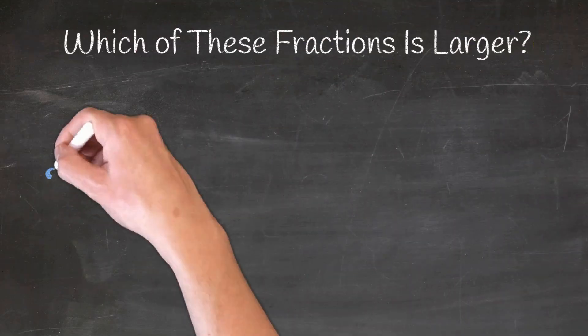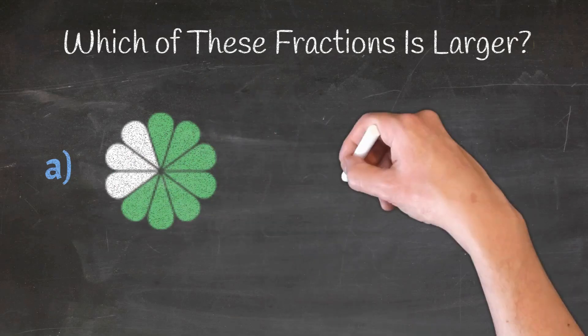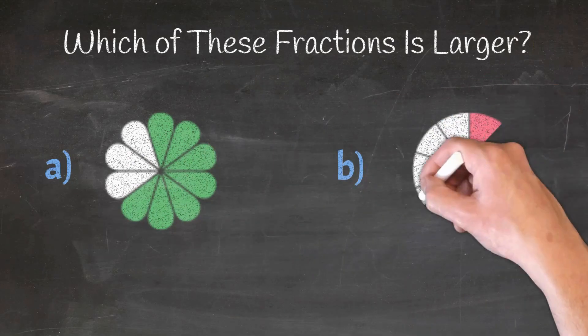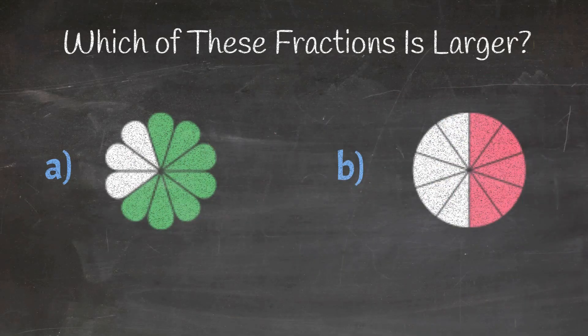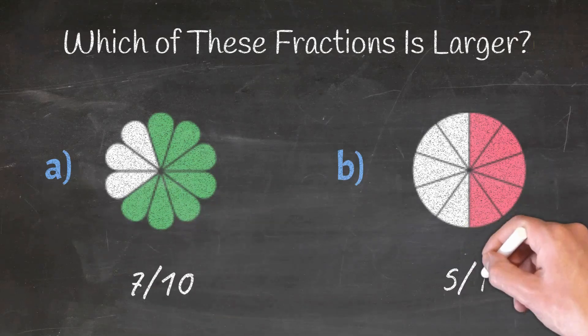Which of these fractions is larger? Fraction A or fraction B? Fraction A is seven-tenths and fraction B is five-tenths, so fraction A is larger than B.